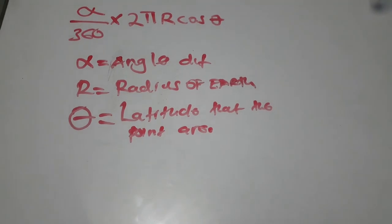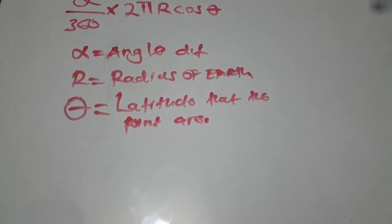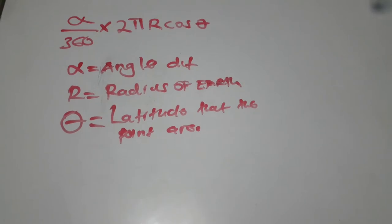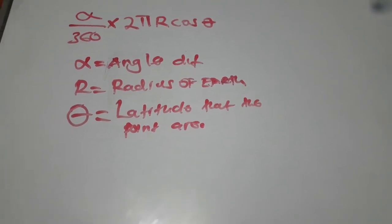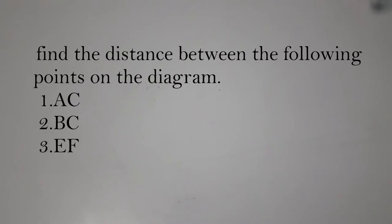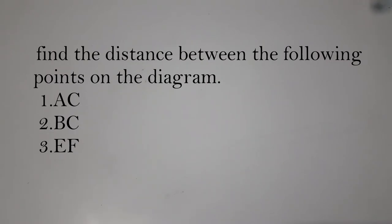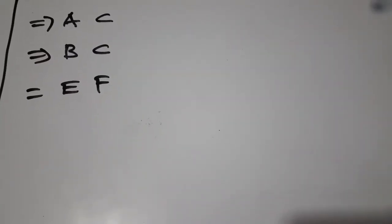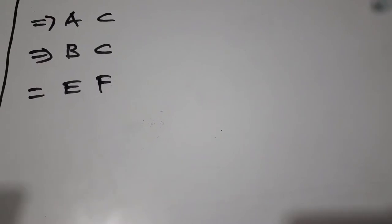So there we have it. We're going to use that formula in finding distance in small circles. To begin with, find the distance between the following points: the first point is AC, the second point is BC, and the third point is EF. We are told to find the distance between these points.